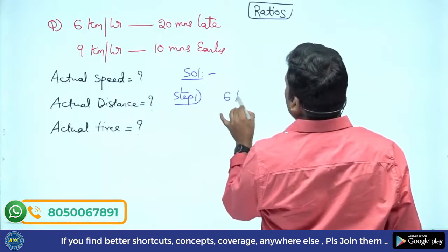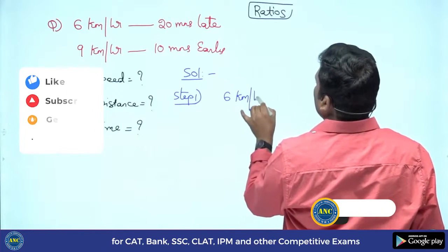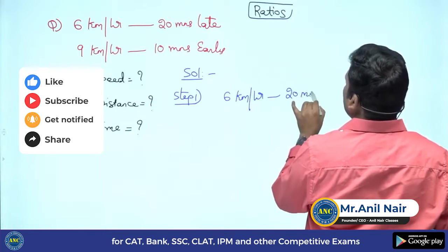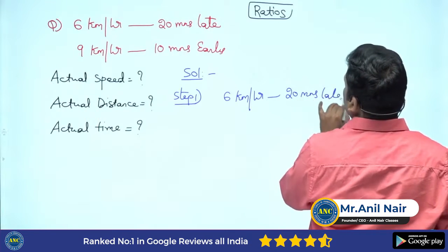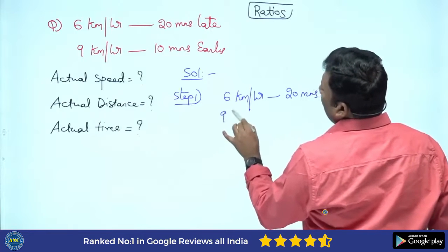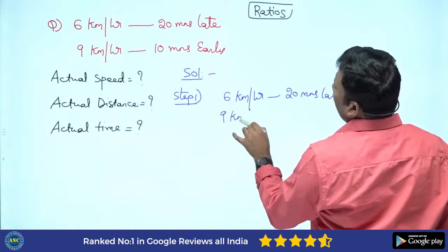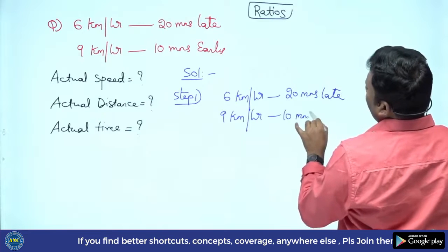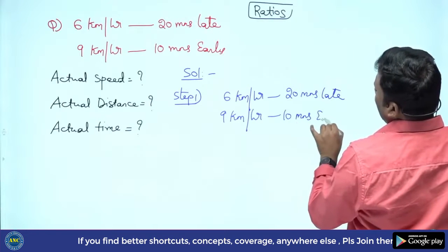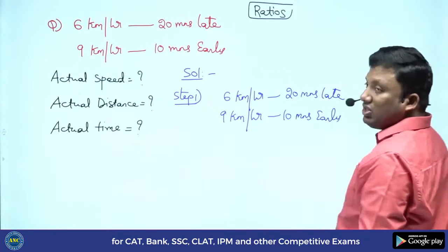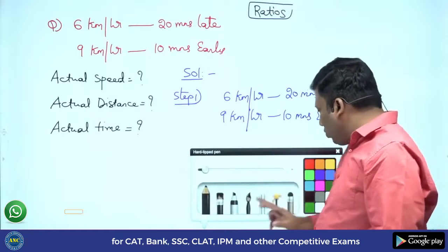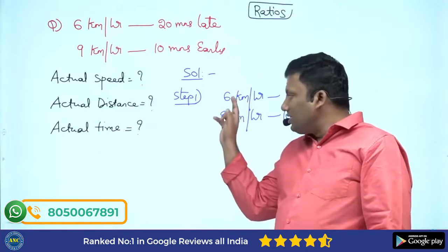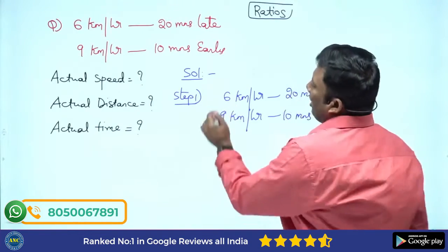The question: 6 kilometers per hour, 20 minutes late; 9 kilometers per hour, 10 minutes early. Step 1: first, go with the speed. What is the speed ratio? The speeds are 6 and 9.